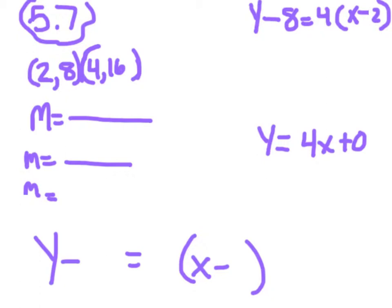And we need to find the slope for this equation. So we would do 16 minus 8 all over 4 minus 2, which would equal 8 over 2, which also equals 4. So we know our slope is 4.